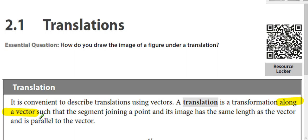So a vector has direction and magnitude, it's got a length and it has a direction. That means you move the entire shape the same direction and the same distance.